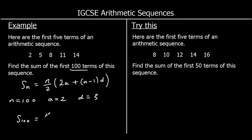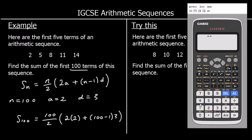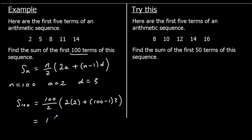Substituting into the formula, the sum of the first 100 terms equals 100/2 × (2×2 + (100−1)×3), which is 50 × (4 + 99×3). Typing that into a calculator gives us 15,050. So if we kept this sequence going for 100 terms and added them all together, the sum of the first 100 terms is 15,050.